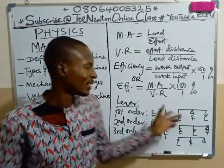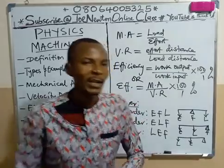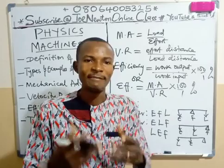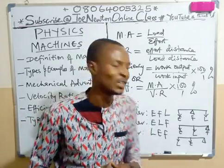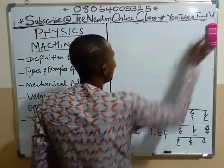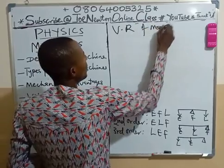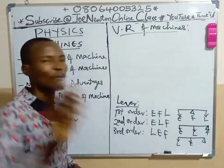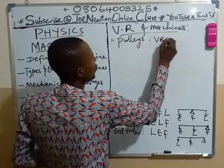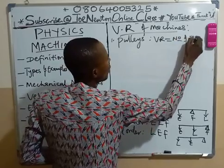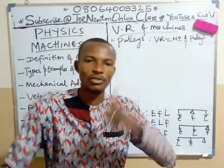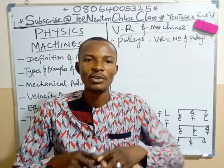Now let's quickly look at velocity ratios of some specific machines, because the velocity ratio is not the same for all machines — it depends on the geometry and working parts of the machine. For a pulley system, the velocity ratio depends on the number of pulleys. If it has two pulleys, the velocity ratio is two. If it has three pulleys, the velocity ratio is three.